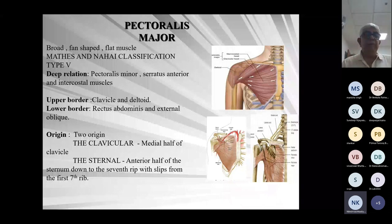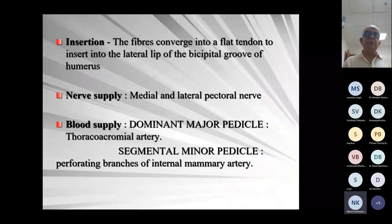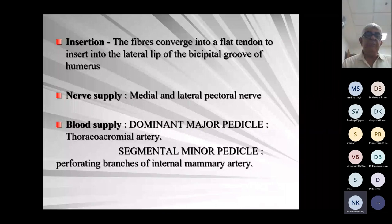This is a Type 5 myocutaneous flap. It has an upper border — clavicular — and the entire sternocostal origin, with two origins: clavicular and sternum. Deep to it are pectoralis minor, serratus anterior, and intercostal muscles. Insertion is in the lateral lip of the bicipital groove of the humerus. Blood supply comes from medial and lateral thoracoacromial arteries. Very important: the dominant pedicle — medial — comes from the thoracoacromial artery, and the perforating branch of the internal mammary artery is the minor pedicle.